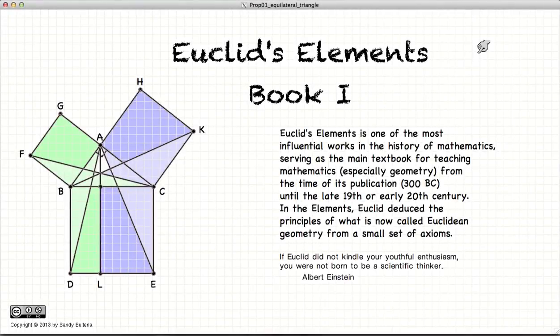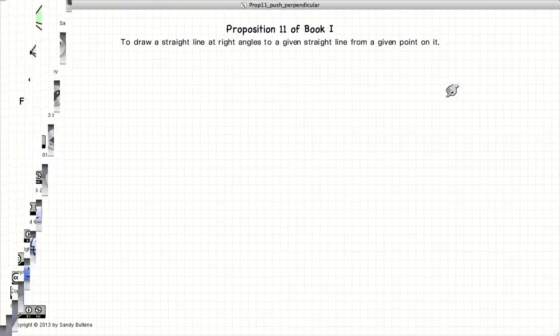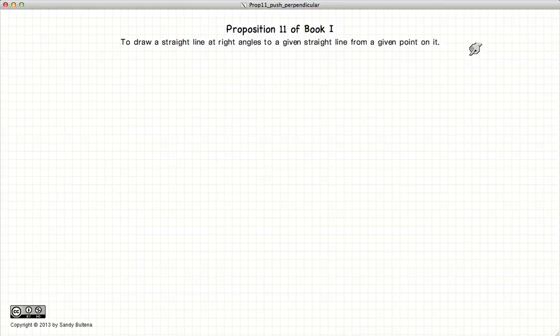Hi and welcome to my tutorials on Euclid's Elements Book 1. This video presentation is going to be on Proposition 11 of Book 1 which states that if we have a straight line